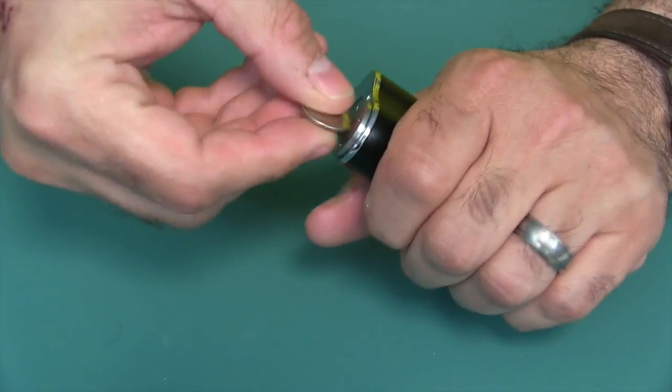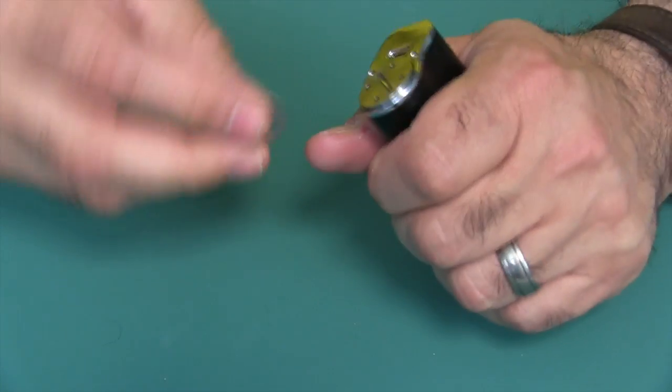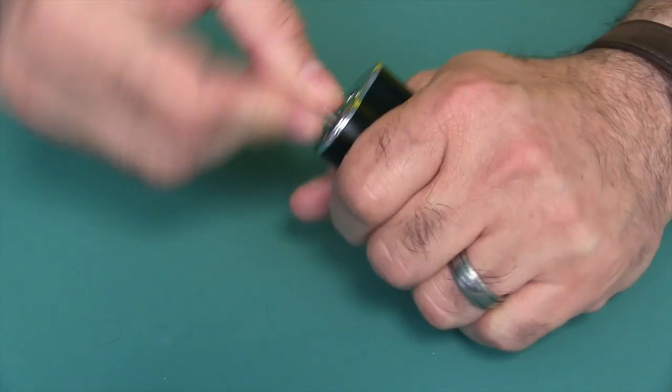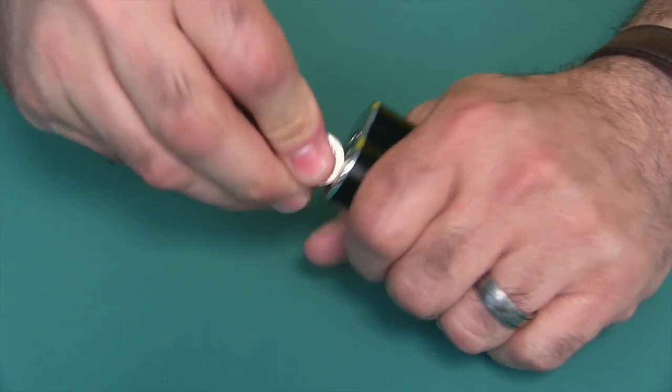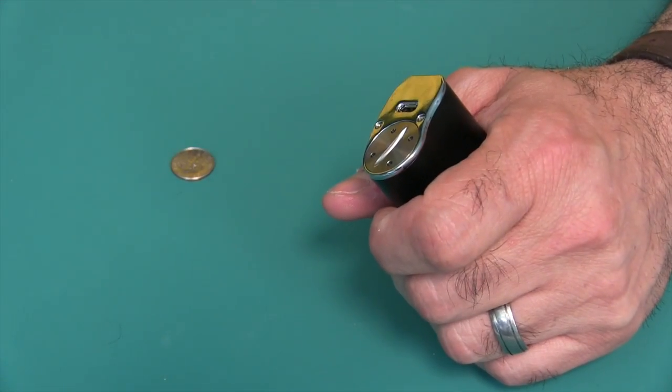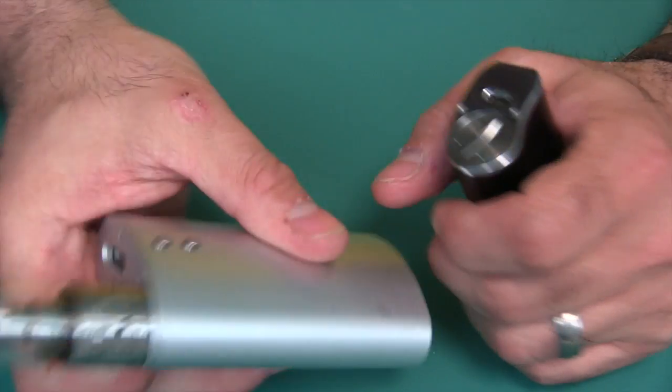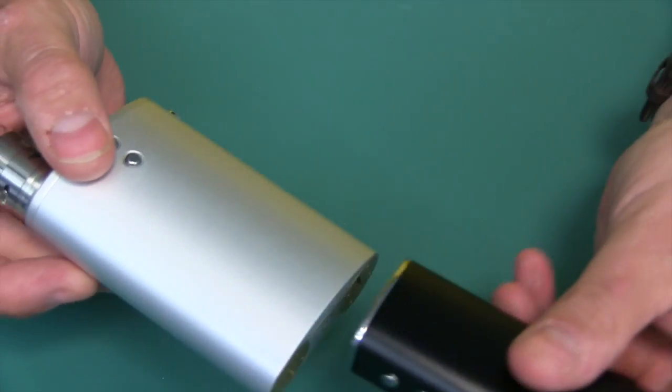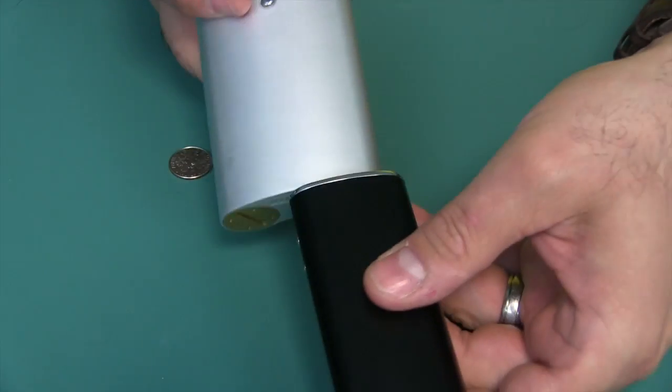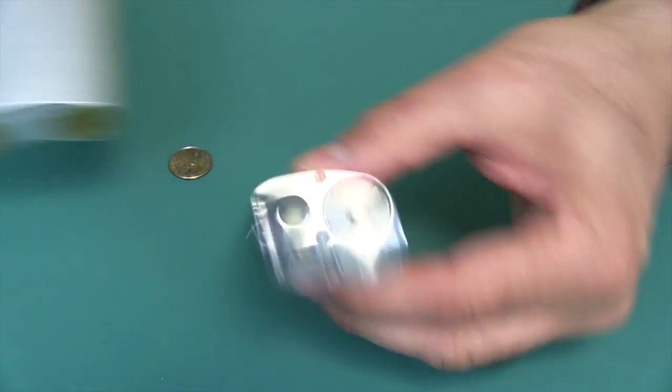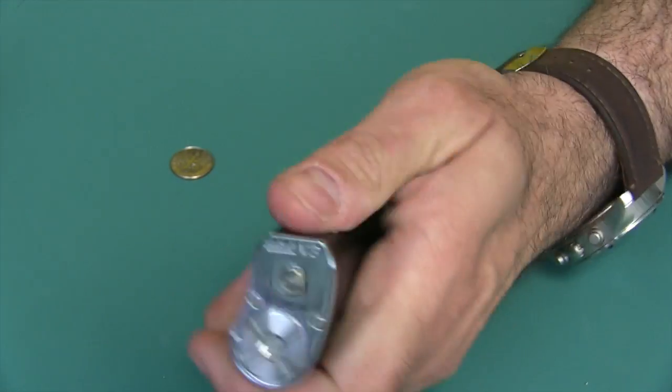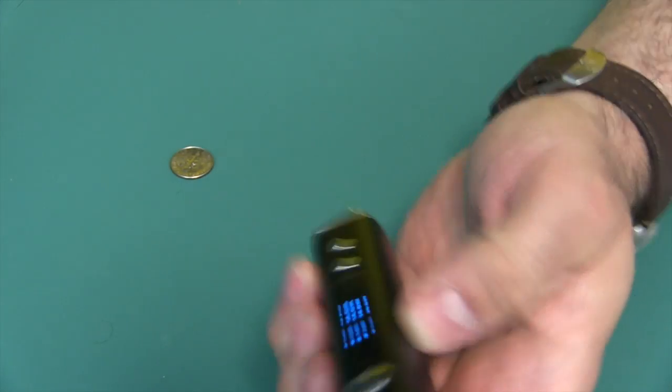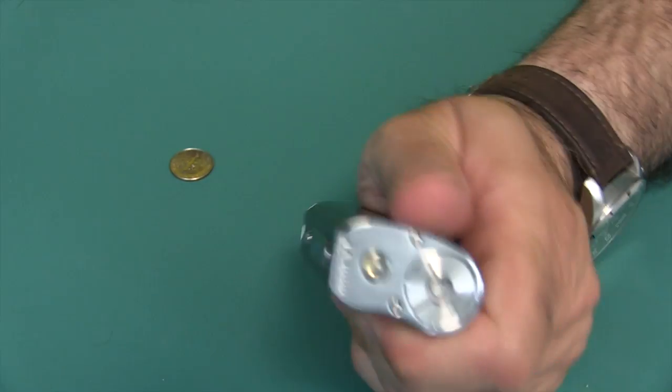The first thing that you'll notice when you first pick up this device, besides how solid it is, is the shape and the feel of it. One of the things that came to mind to me right off the bat was, if someone were to make a mini flask, it would be this. It's sort of like half a flask. It has that nice curve. It feels really good in the hand, whether you're left or right. Just a good solid device.